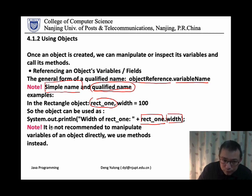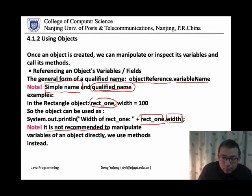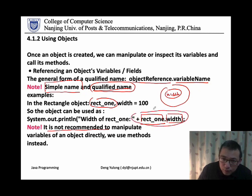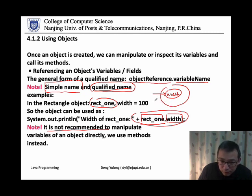However, we must notice that it is not recommended to use this form to access the variables inside the object directly. Why? Because there is a very important feature of object-oriented programming — that is, encapsulation. If we use this qualified name to access the member variable directly from outside the object, you will break the encapsulation. So it is not recommended to do this.